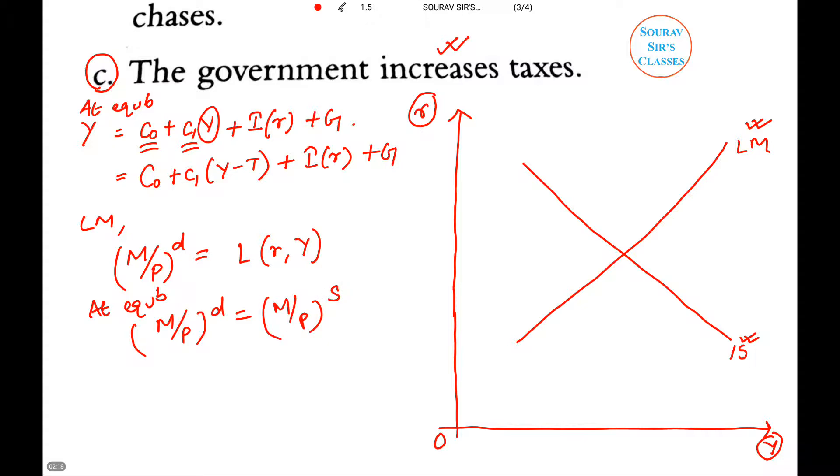If we want to increase tax, or if the government is increasing tax, we need to find out first which curve will get affected. If you look at the IS equation and the LM equation, you can clearly see that this particular part is fixed - the supply is fixed. In the demand part we can see it is a function of interest rate and income.